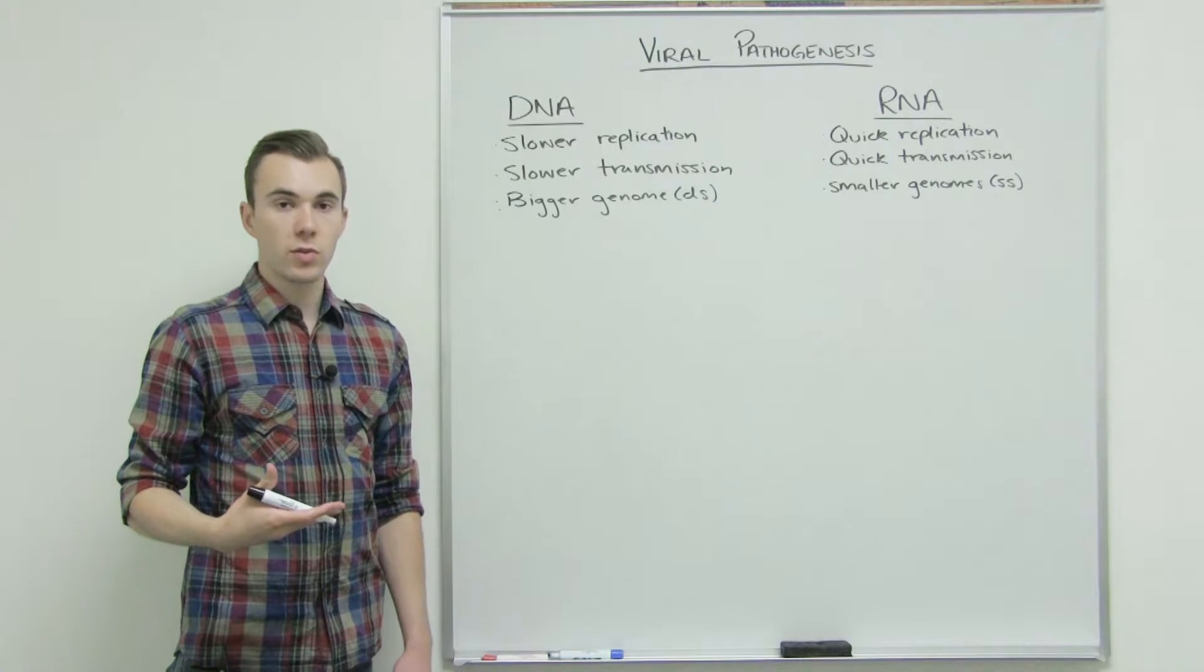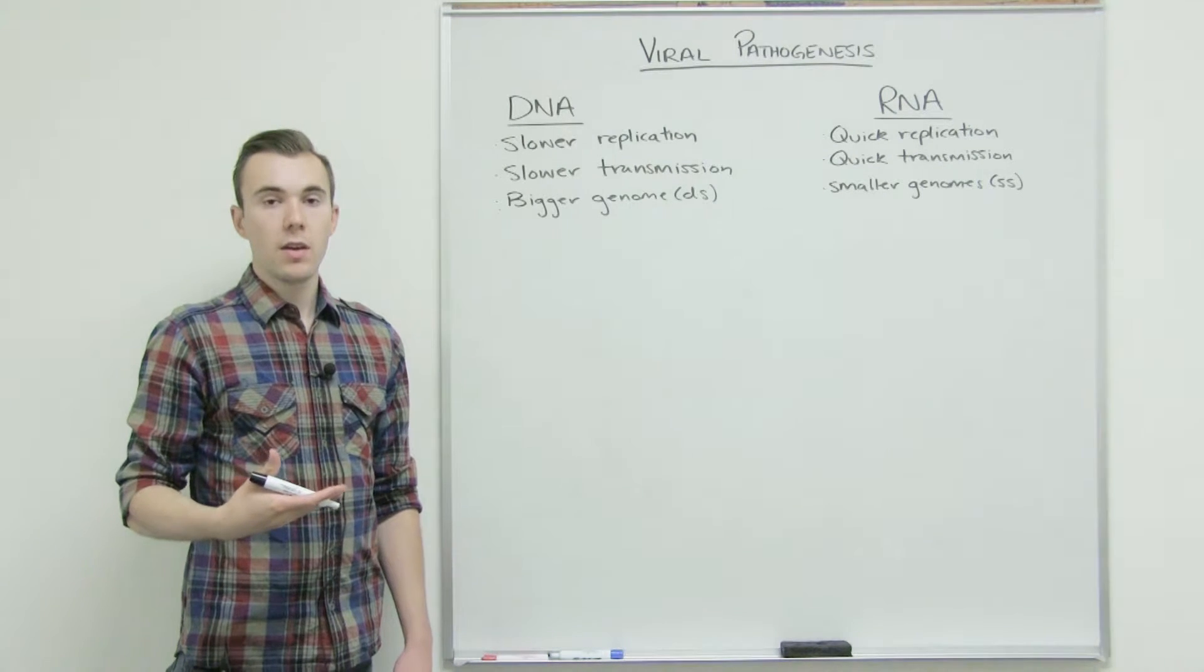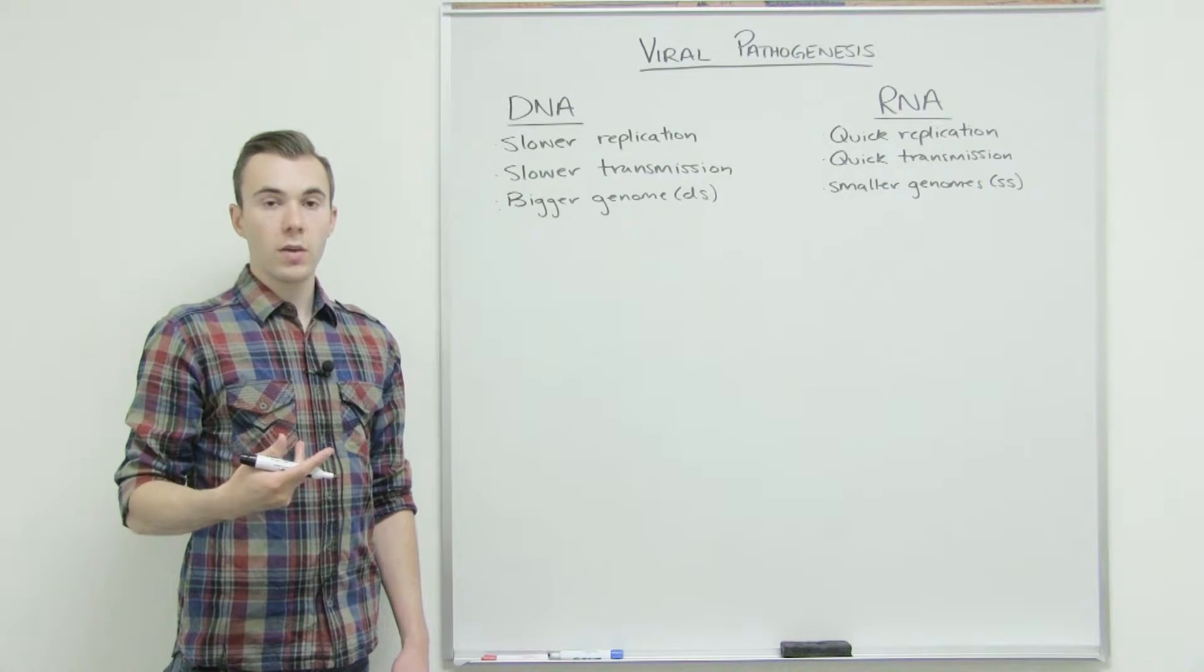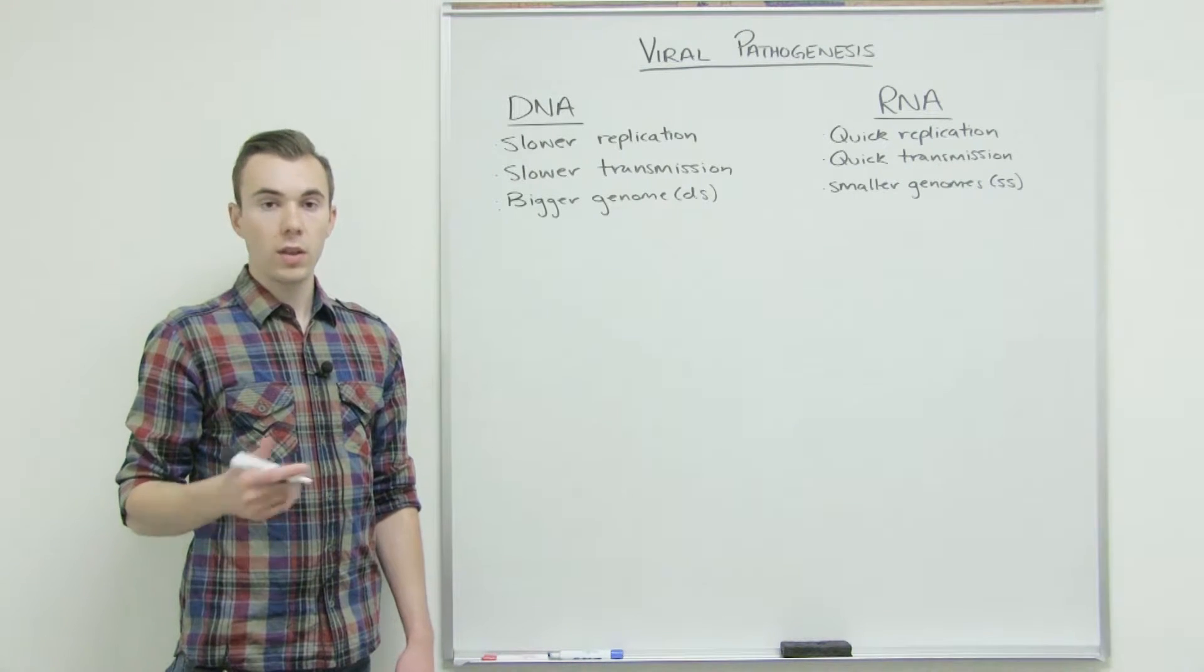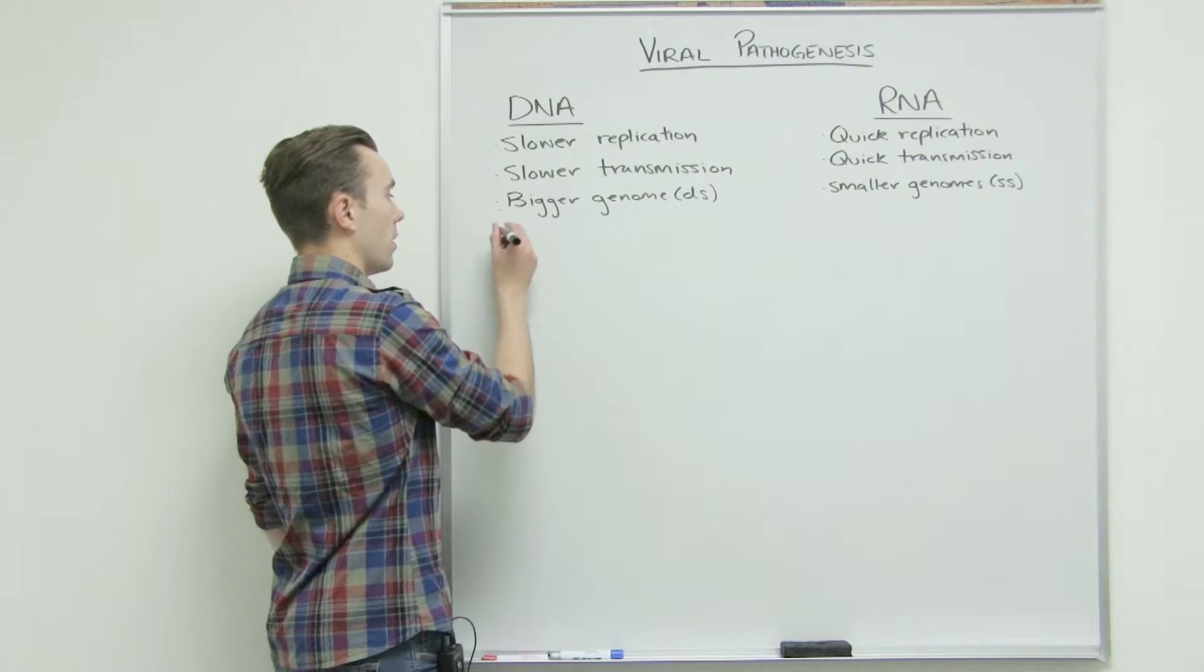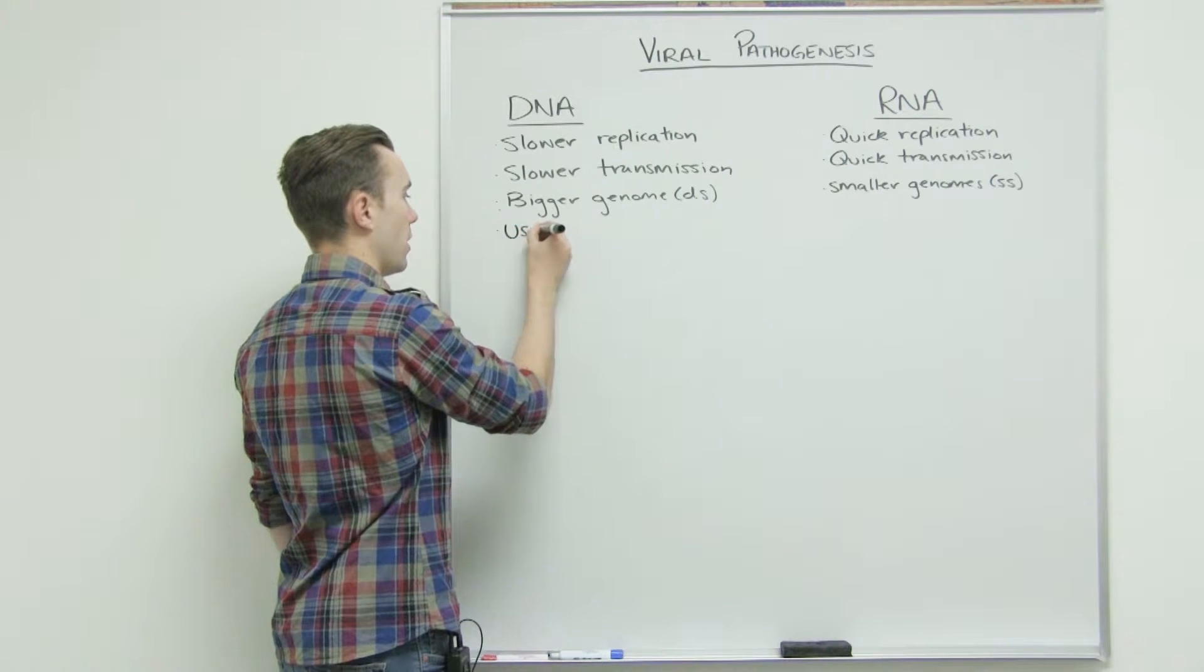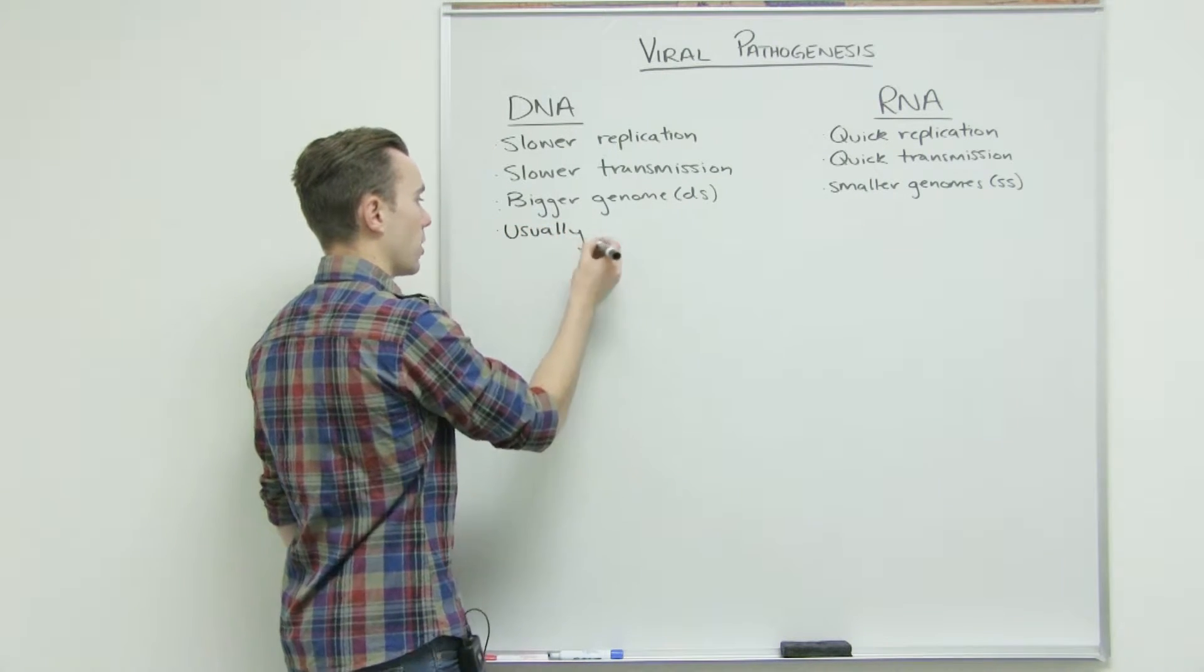The types of infections that these viruses have can either be acute, chronic, or latent. DNA viruses are usually chronic or latent infections, while RNA are acute.